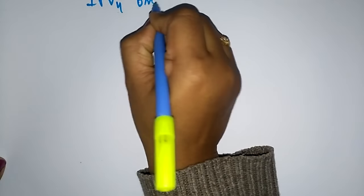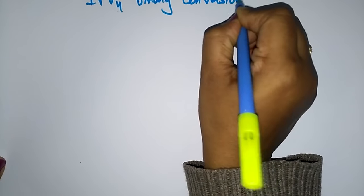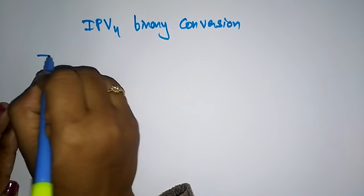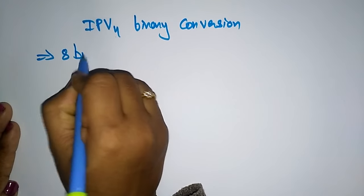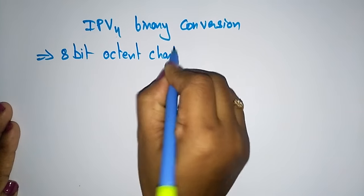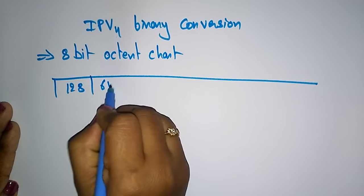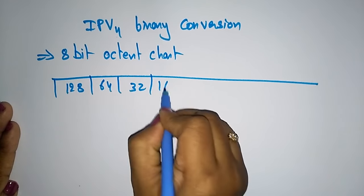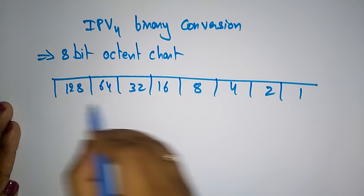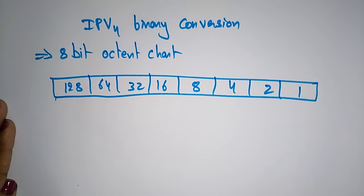Let me explain the IPv4 binary conversion using an 8-bit octant chart. The 8-bit octant chart consists of the following bit values: 128, 64, 32, 16, 8, 4, 2, 1.